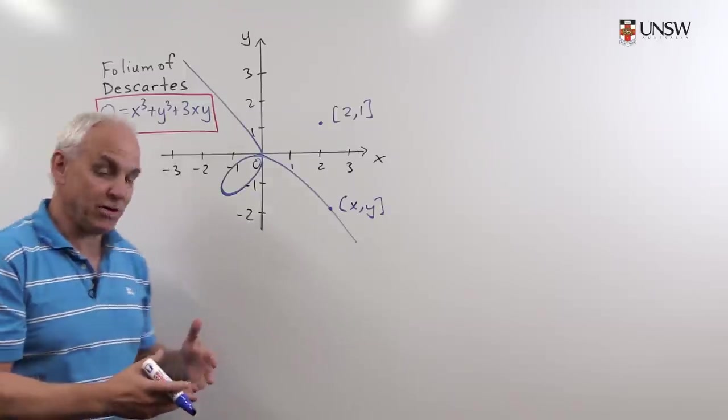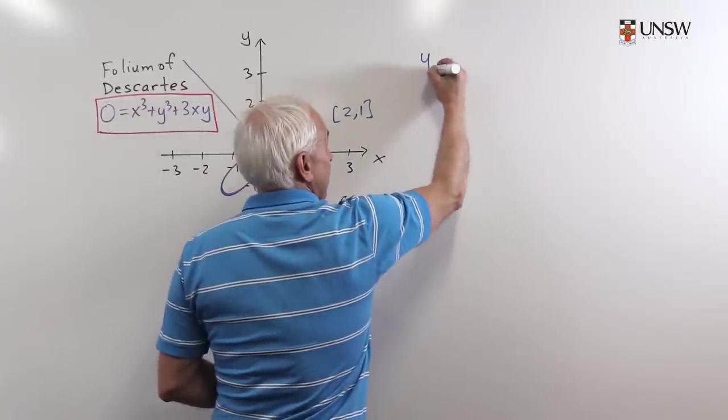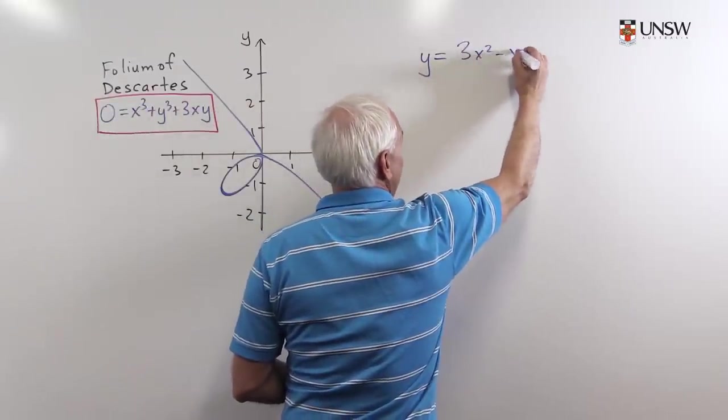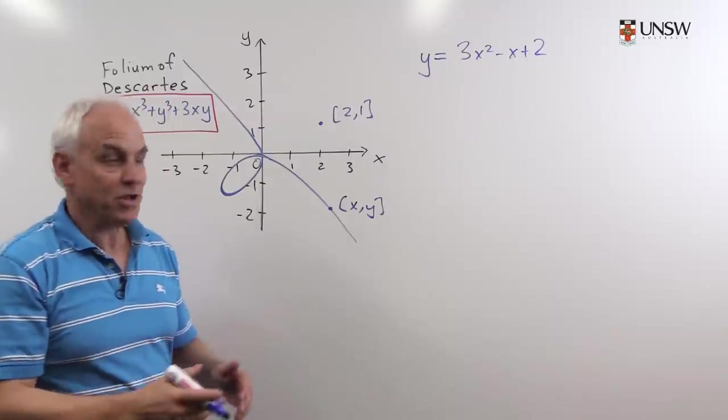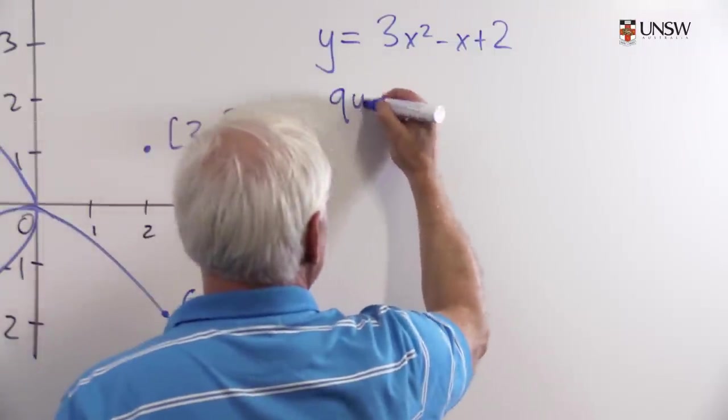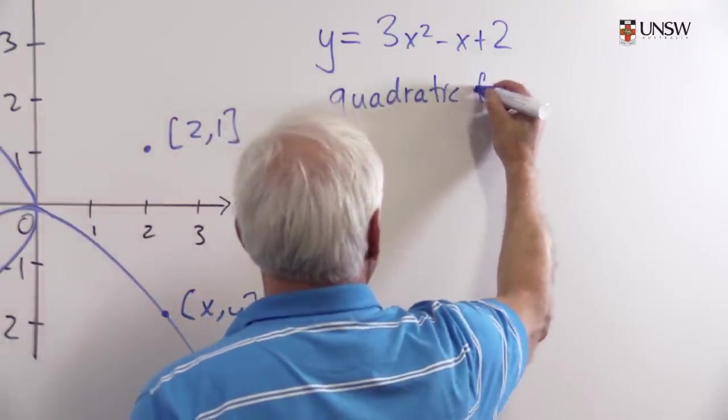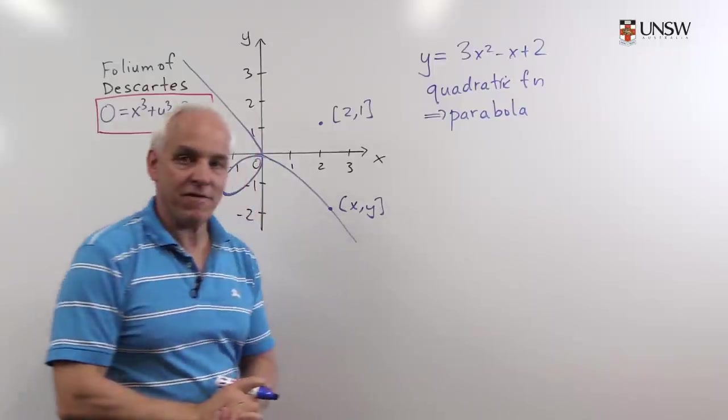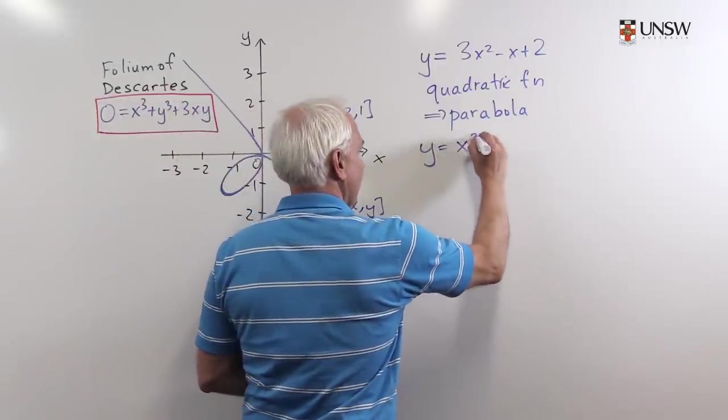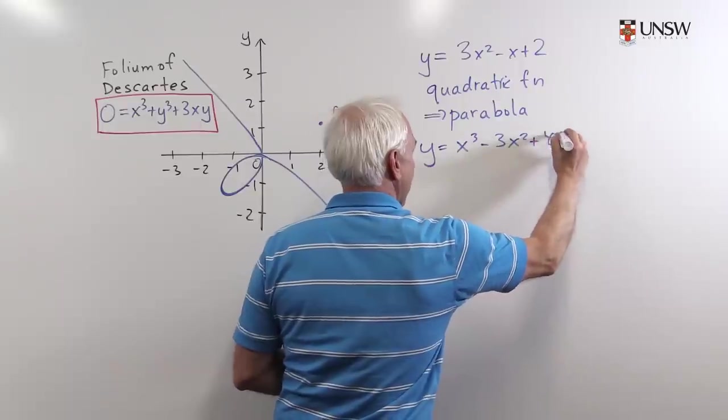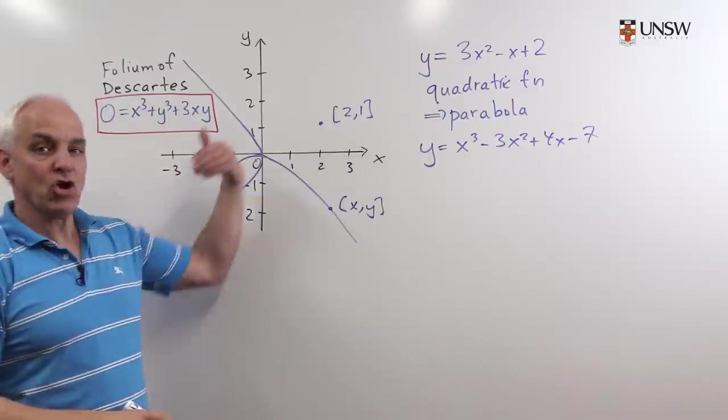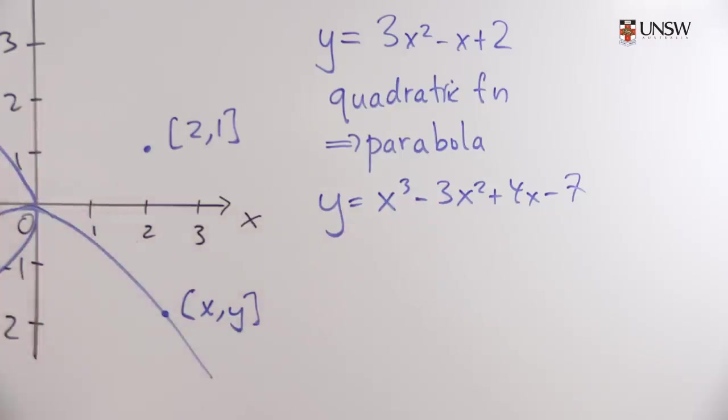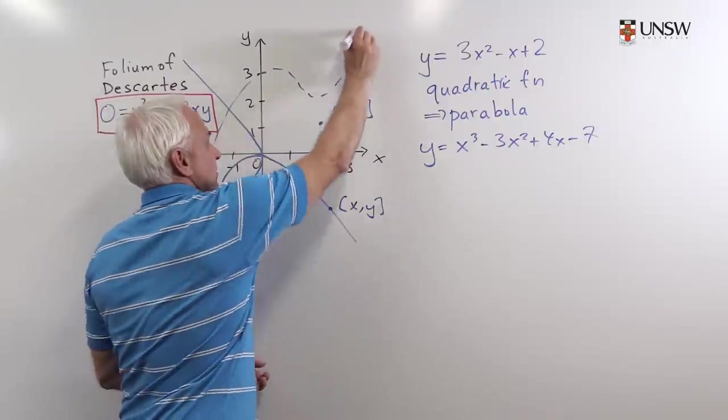So this allows us to introduce all kinds of new curves. In particular, if we have a function like y equals 3x squared minus x plus 2, well, that's a quadratic function which determines a parabola. If we have a degree 3 function like y equals x cubed minus 3x squared plus 4x minus 7, something like this, then we expect a cubic function which has not quite the complicated aspect of this because there's only a single y, so it's simpler than this kind of thing. But it's a cubic function that has some kind of shape like this.